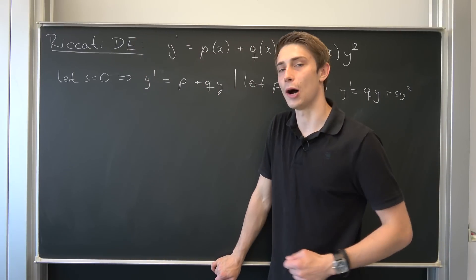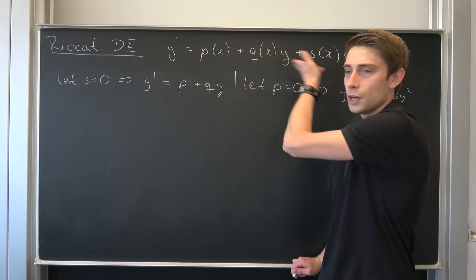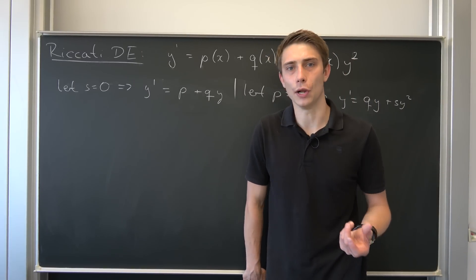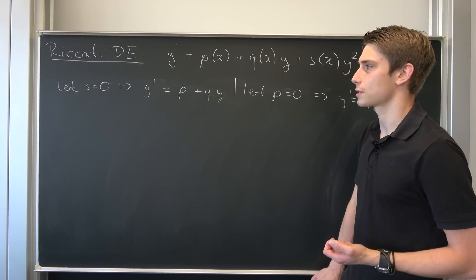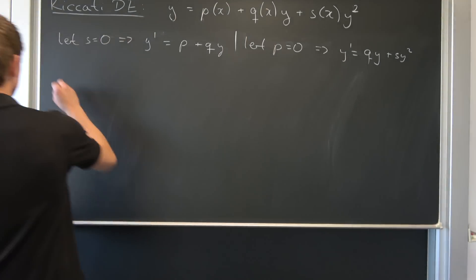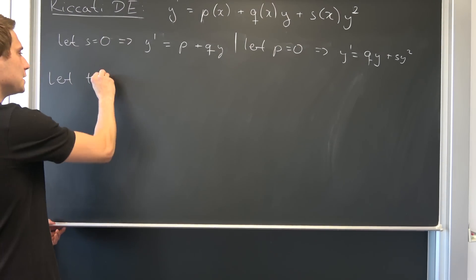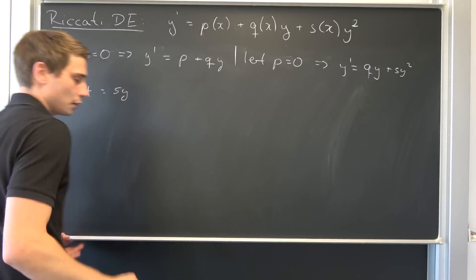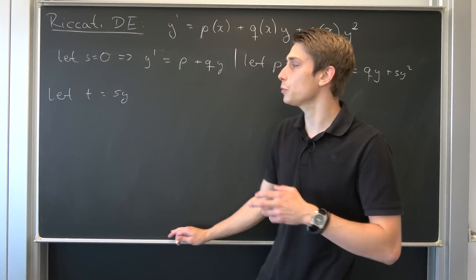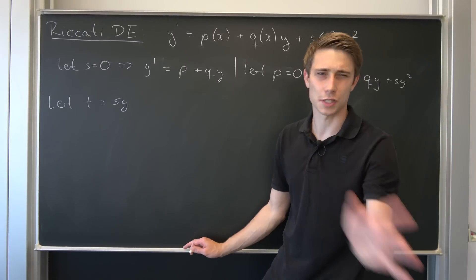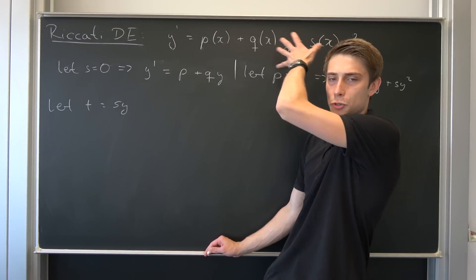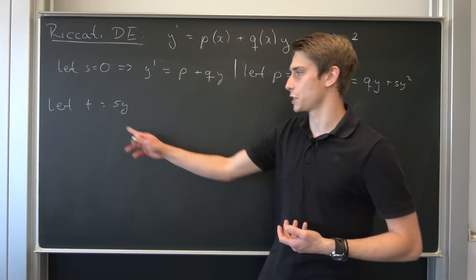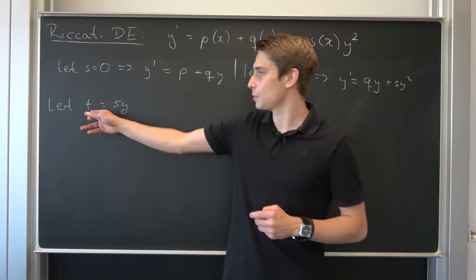That's quite cool. Now let's start off with the real solution method for differential equations of this form. To solve something like this we want to reduce it, and we do this by making use of simple substitutions. Let t of x be equal to — and this substitution comes in quite naturally — s times y. We have a few conditions: we want t to be differentiable, we want s to be differentiable, and we don't want s to be equal to 0.